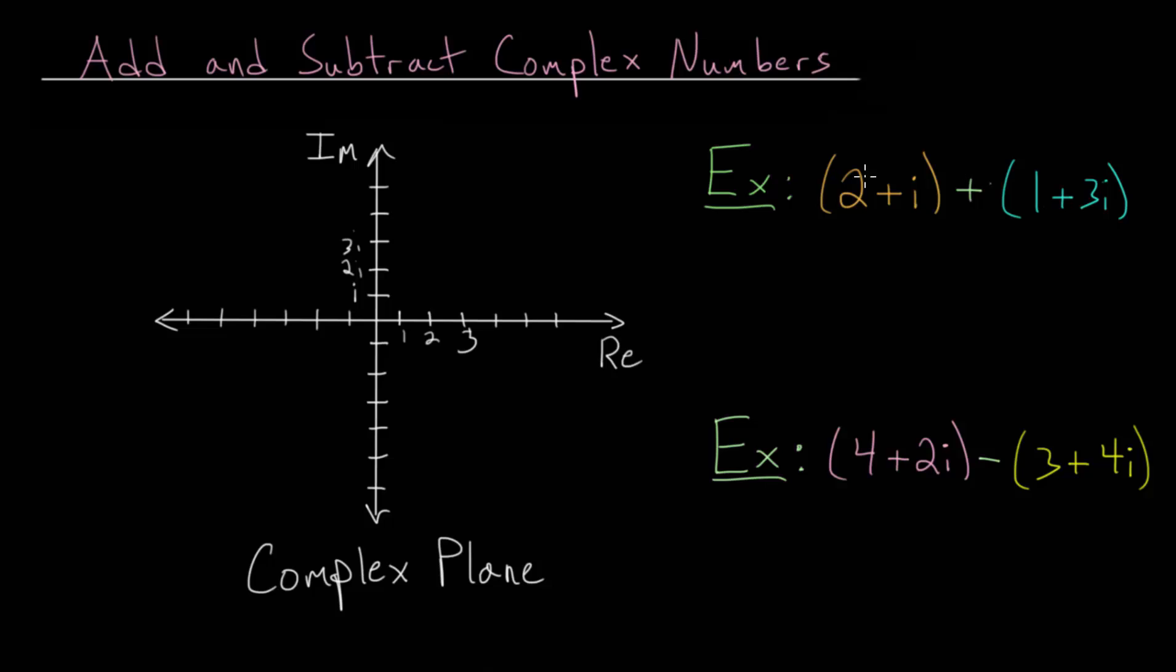So let's first start by just plotting these points. So we have 2 plus i, so we go over 2 in the real part, and then up 1 in our imaginary part, and so this point 2 plus i is right here on our complex plane.